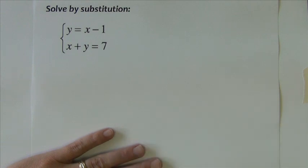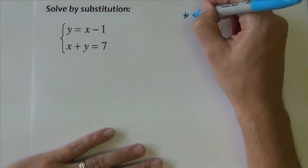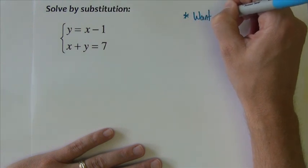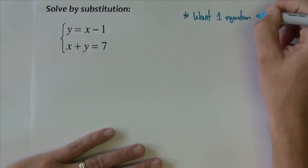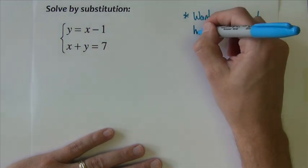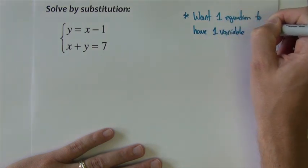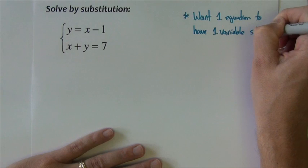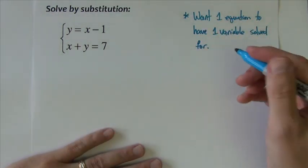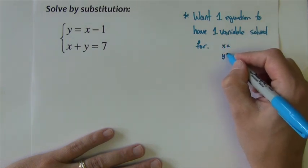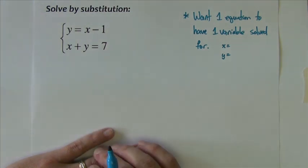This first example asks you to solve by substitution. With substitution method, you want one of the equations to have one variable solved for. In other words, I want one of the equations to say either x equals or y equals. If I see something like that, then typically I go to substitution method.